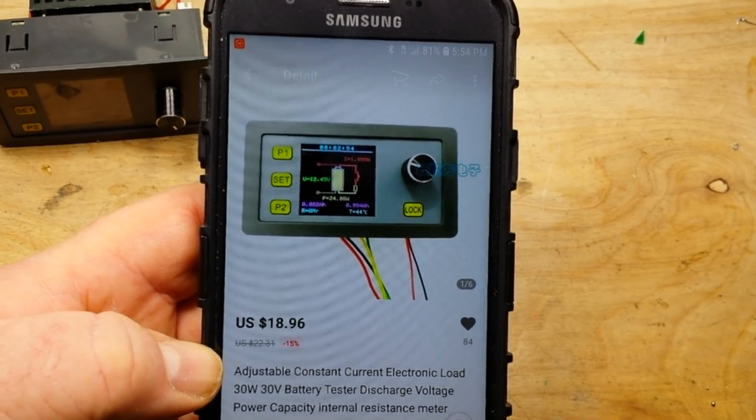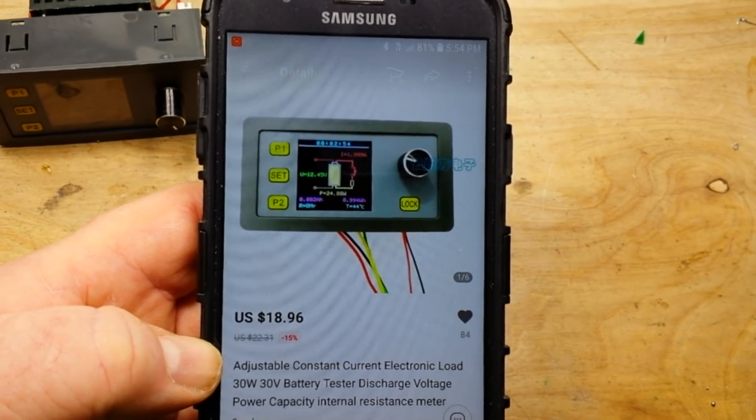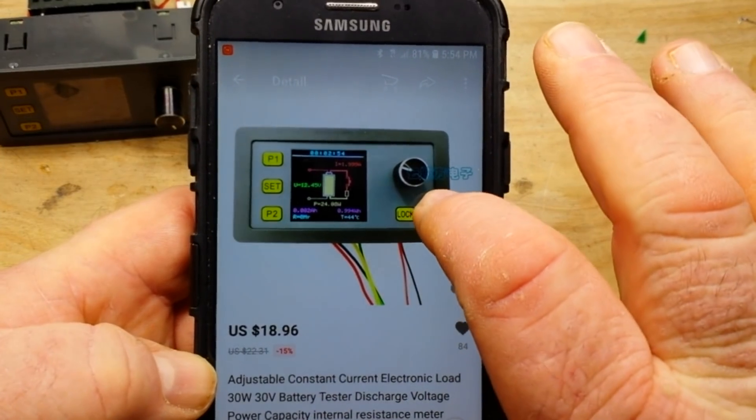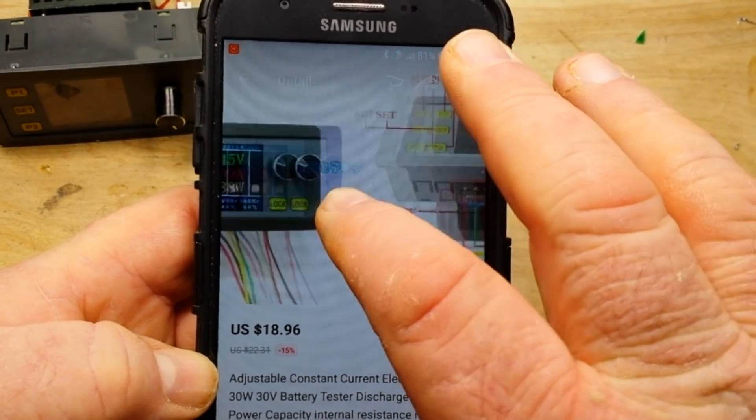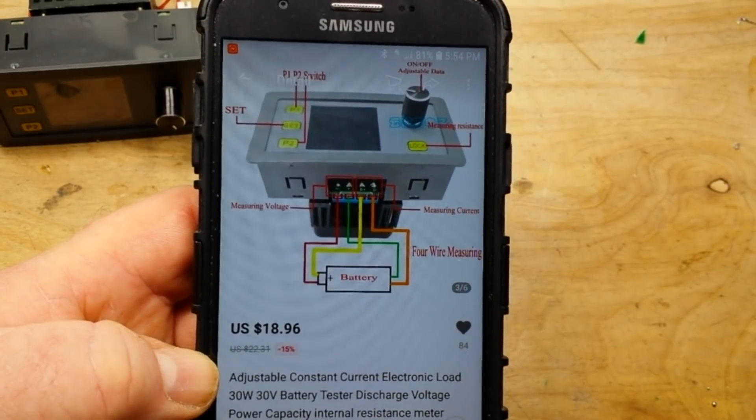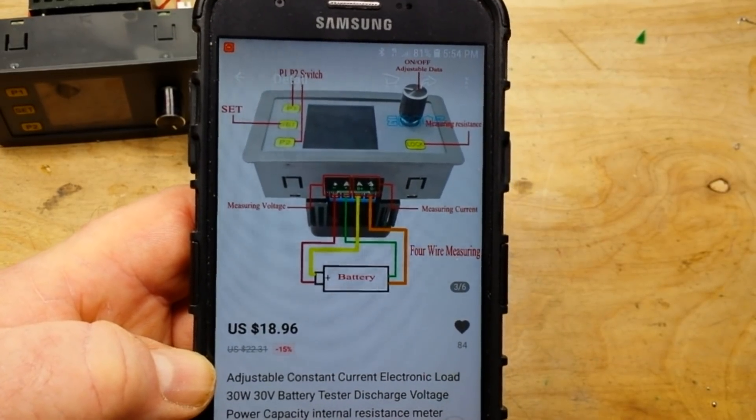I bought it on January 4th, it arrived today January 17th, so about two weeks to get here. Now I also bought a case for it and apparently the case is not going to be here for like a month, so that's not super great.